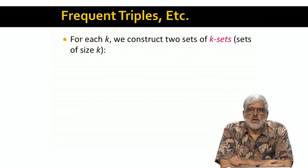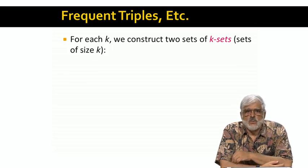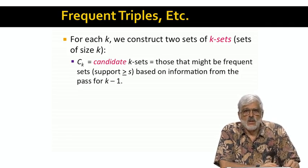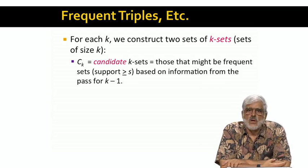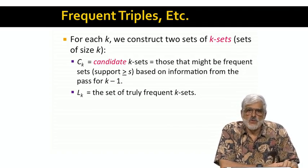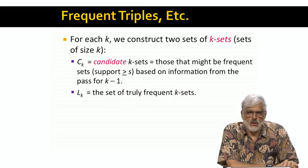The idea used on the second pass extends to later passes that construct larger sets. Let's use the term K-set for an item set with K members. There are two collections of K-sets associated with our effort to find all the frequent K-sets. C sub K is the candidate K-sets — the sets that, based on information from previous passes, might be frequent. At least we can't rule out the possibility of them being frequent by using monotonicity, so we have to count them. The result of the Kth pass we call L sub K, which is the subset of C sub K consisting of those K-sets found on the Kth pass to be really frequent.